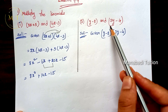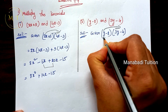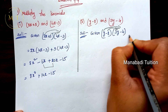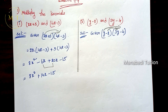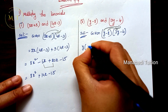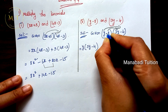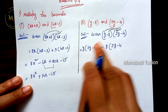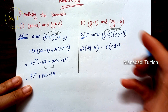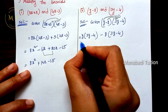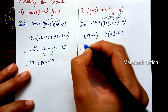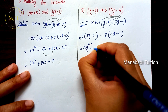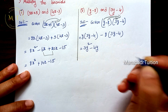Next, second question: y minus 8, and 3y minus 4. Same method — multiply the first term of the first expression by the total second expression, then the second term by the total second expression. So y into (3y minus 4), and minus 8 into (3y minus 4). So y into 3y gives 3y squared.